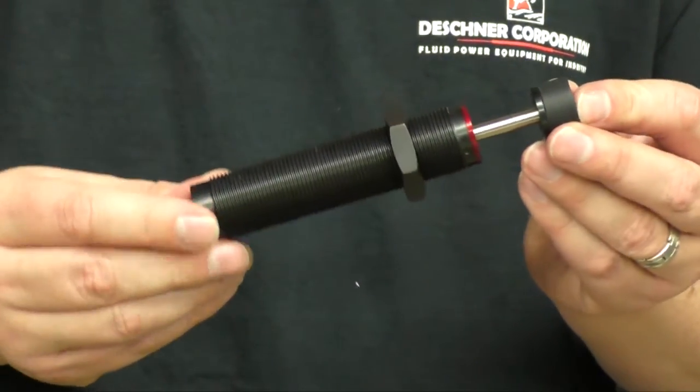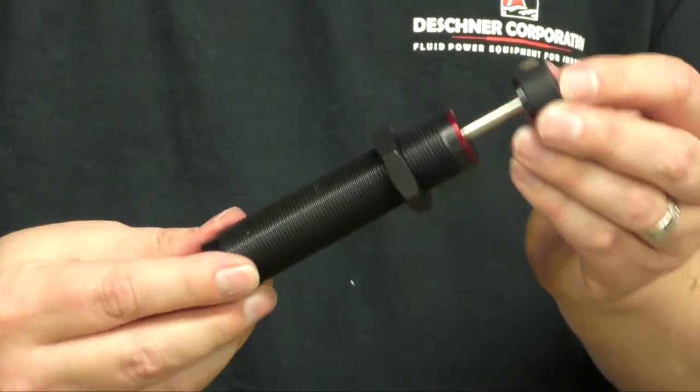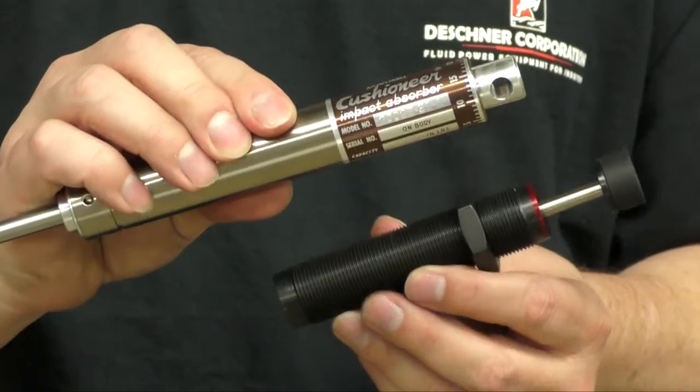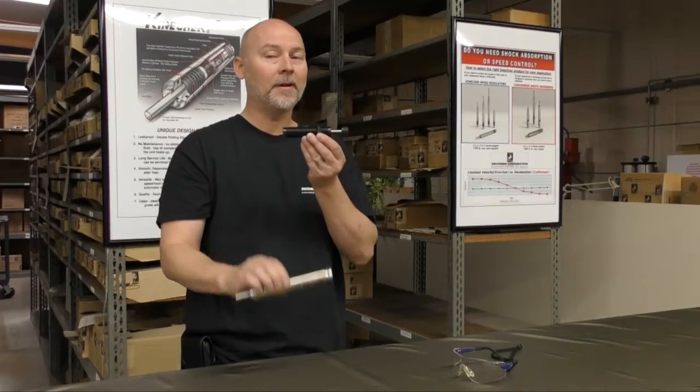This Impacta 7000 series is made with the same precision and high quality materials as our Cushioneer 2000 series, but at half the price.